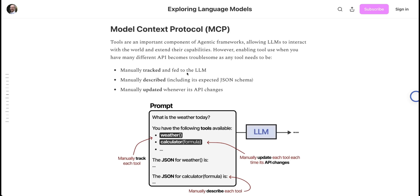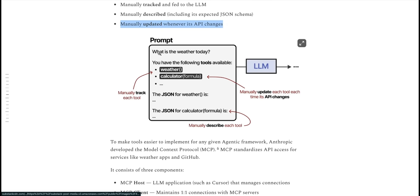Let's look at this example from the same blog post. In general, tools are important components of agent frameworks, allowing LLMs to interact with the world and extend their capabilities. However, enabling tool use when you have many different APIs becomes troublesome as tools need to be manually tracked and fed to the LLM, manually described, and then manually updated whenever the API changes. If you have something like a prompt which asks for today's weather, you need to provide a list of different tools that are available to the LLM. The LLM will decide which tool to use, make that call, get the response, and then feed those results to generate the final response.